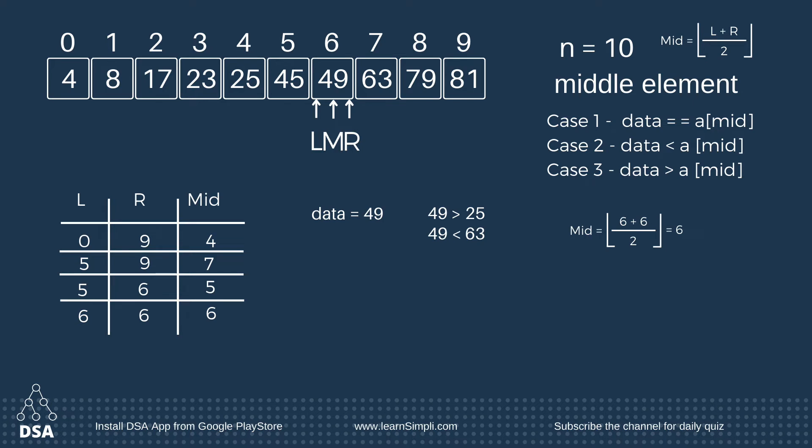So far we saw what happens when the data element is present in the array. Next we will see what to do when the element is not present. Let's see how binary search works when the array doesn't have the element you are searching for.